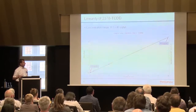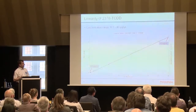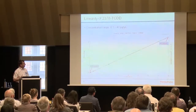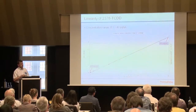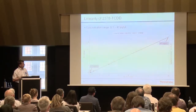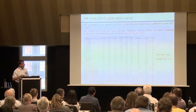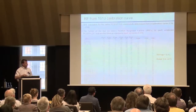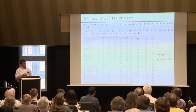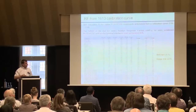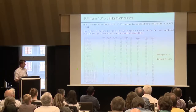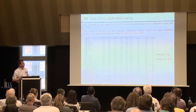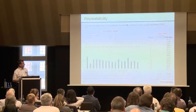For linearity of response for dioxins, we're not looking at the coefficient of determination or R-squared values. Instead, we're looking at the response factors. We used the CS1 to CS4 set of standards to plot the linear response. The average percentage RSD was 2.2% — well within the 20% required by regulation — and the highest value was 4.7% for a hexa-CDF congener. Very robust results.